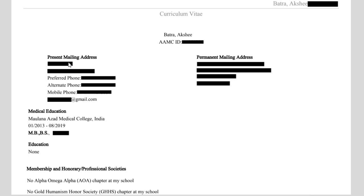So that you can tell the program that you have relatives here and you would really want to match somewhere near where your family and friends are. Then the preferred phone and alternate phone number — I gave my Indian number as well as I bought a Skype US number so that programs could reach me on my Skype US number, because generally they wouldn't prefer to call an international number.